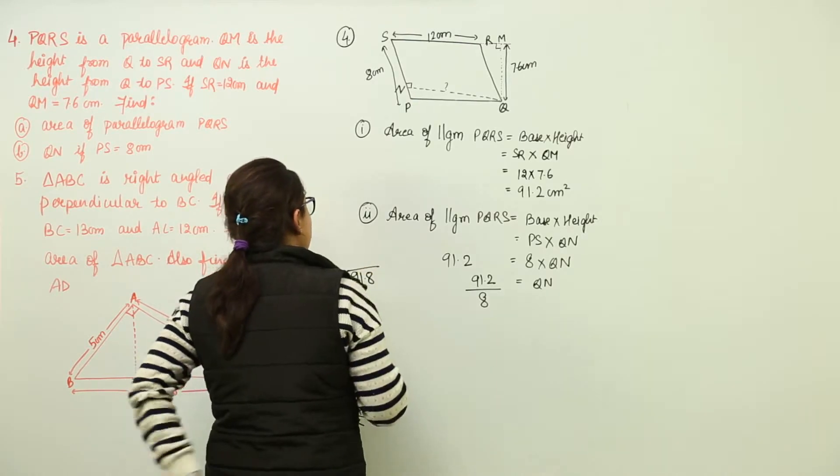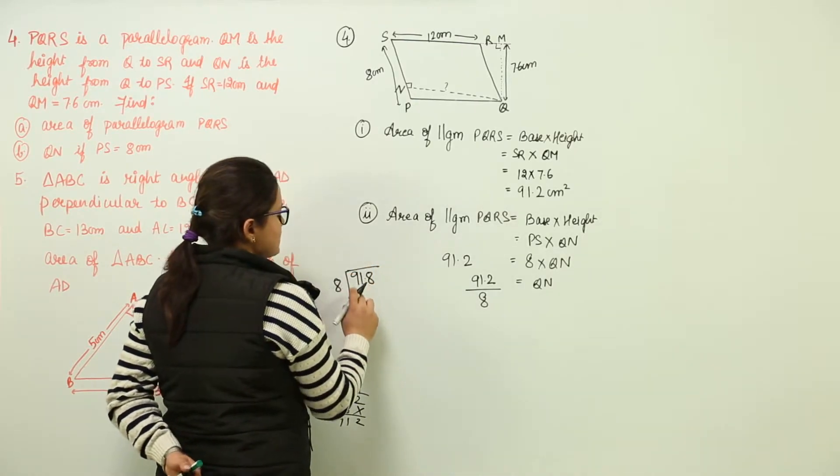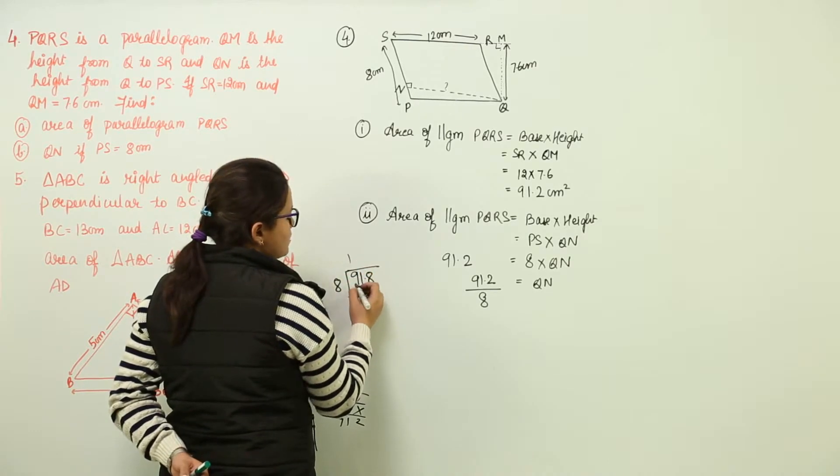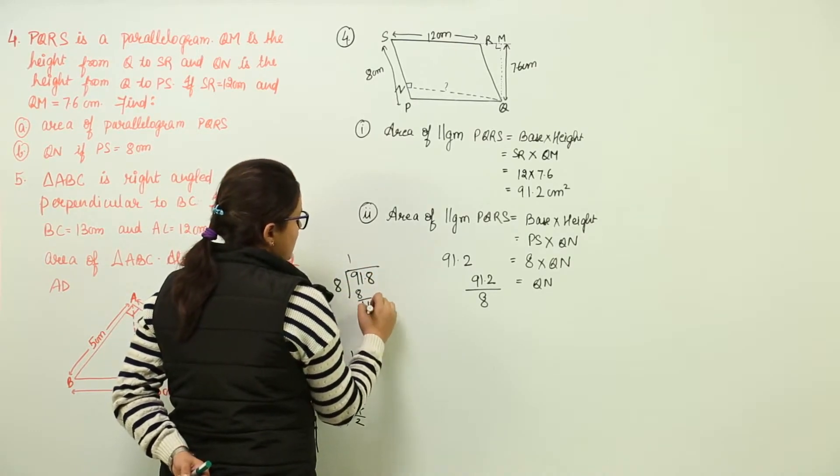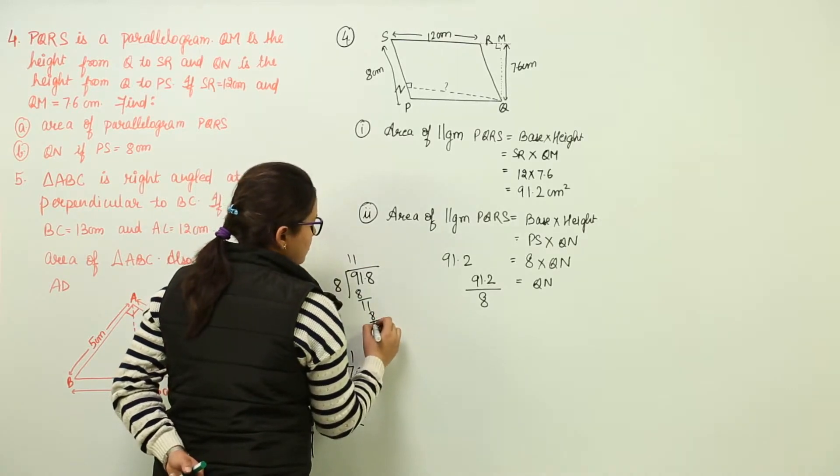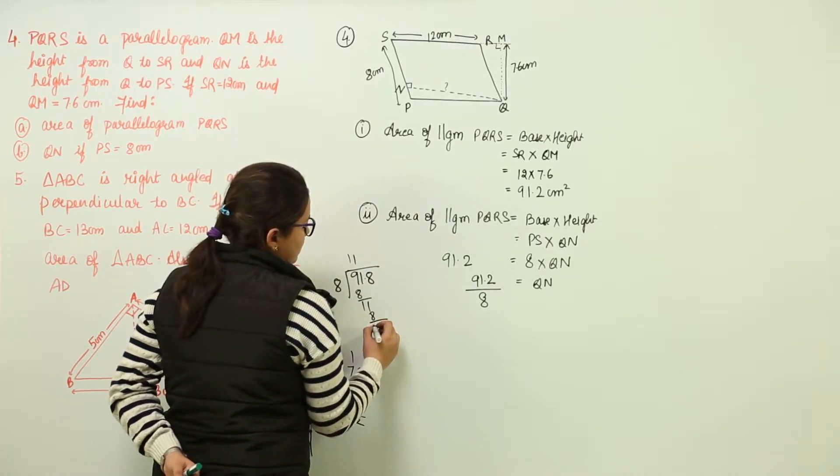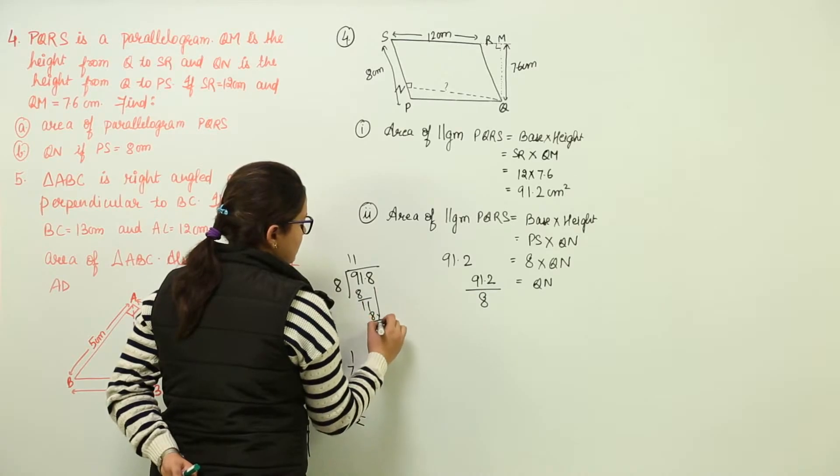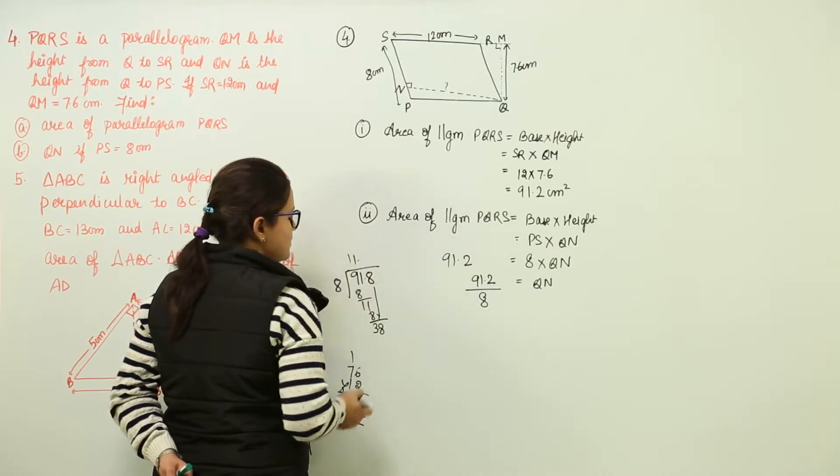We will get 8 7s as 56, 8 9s as 72. We can do it from the one digit only. So 8 1s as 8. Then you add a next digit and add a decimal over here.